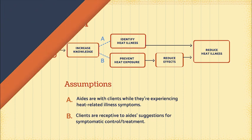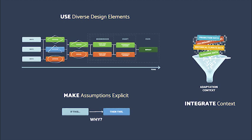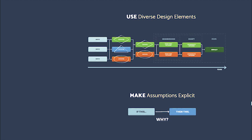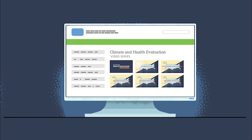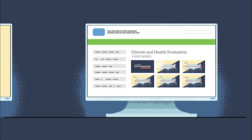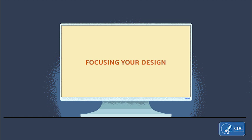A list titled 'assumptions' appears below the logic model, including: aids are with clients while they're experiencing heat-related illness symptoms, and clients are receptive to aids' suggestions for symptomatic control and treatment. Using the best practices described in this video can allow you to tackle common challenges faced by practitioners in Step 2 of the evaluation framework. CDC provides many useful resources on describing programs; please visit our climate and health evaluation web page. In the following video, our three practitioners will begin Step 3: focusing the evaluation design for the health adaptation work.